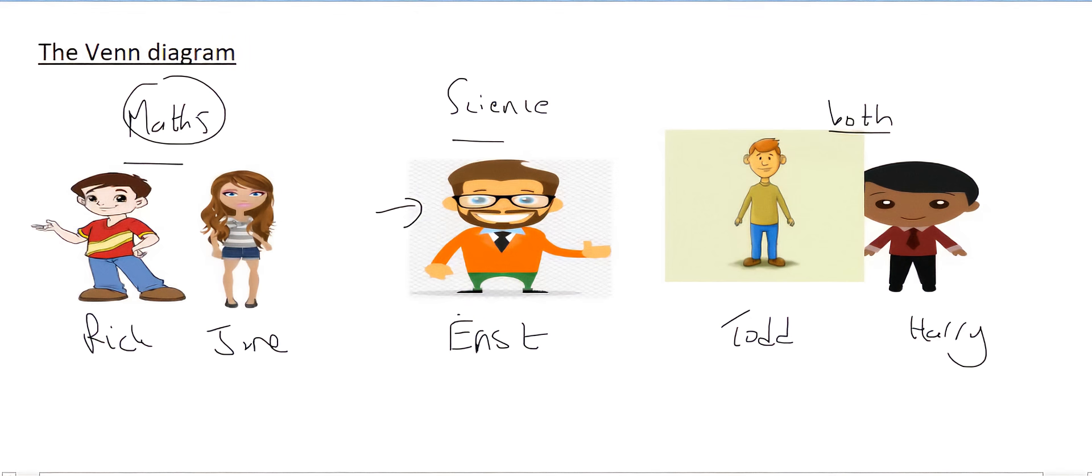Now, you could list them like this, so you could say maths, and then you could show all the people who do maths, you could have science, and then you could have both. But mathematicians have come up with a better way to do it, a way that describes it even better, and that is using a Venn diagram.